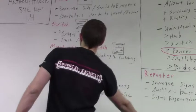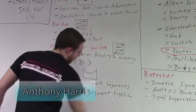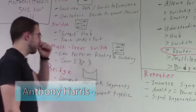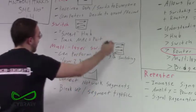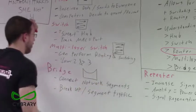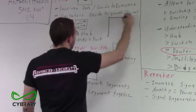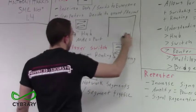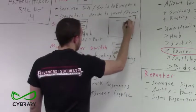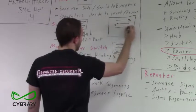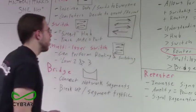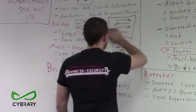We have hubs and we have switches, and next we have multi-layer switches. Our switches also have icons, just like our hubs. You'll usually see the switch icon as four arrows going in alternating directions on our network diagrams.